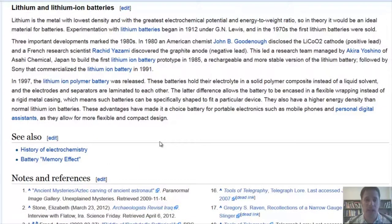Lithium is the metal with the lowest density and with the greatest electrochemical potential in energy-to-weight ratio. So in theory, it would be an ideal material for batteries. Experimentation with lithium batteries began in 1912 under G. N. Lewis, and in the 1970s the first lithium batteries were sold. Three important developments marked the 1980s: In 1980, an American chemist John B. Goodenough disclosed the lithium cobalt oxide cathode (positive lead), and a French research scientist Rachid Yazami discovered the graphite anode (negative lead). This led a research team managed by Akira Yoshino of Asahi Chemical Japan to build the first lithium-ion battery prototype in 1985, a rechargeable and more stable version of the lithium battery, followed by Sony that commercialized the lithium-ion battery in 1991.